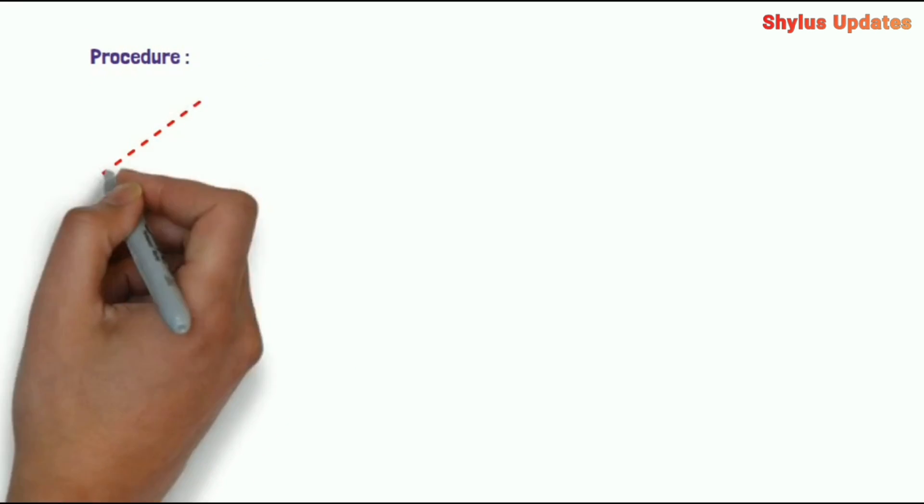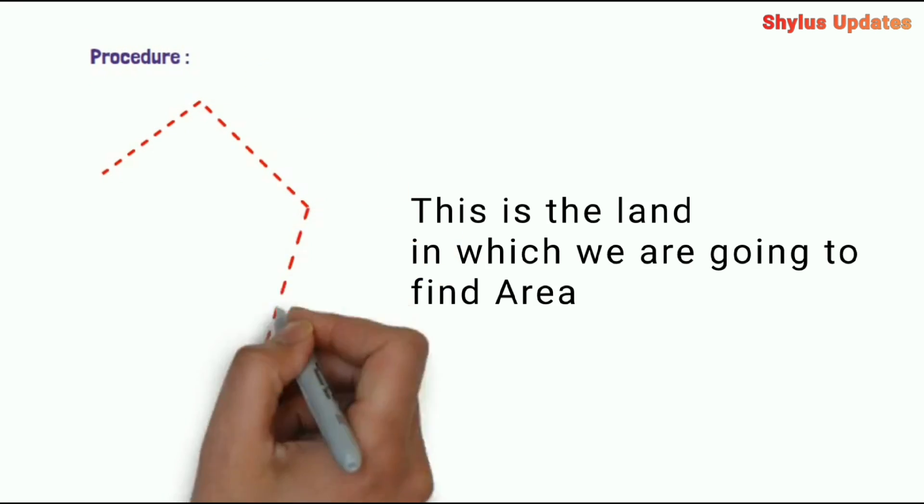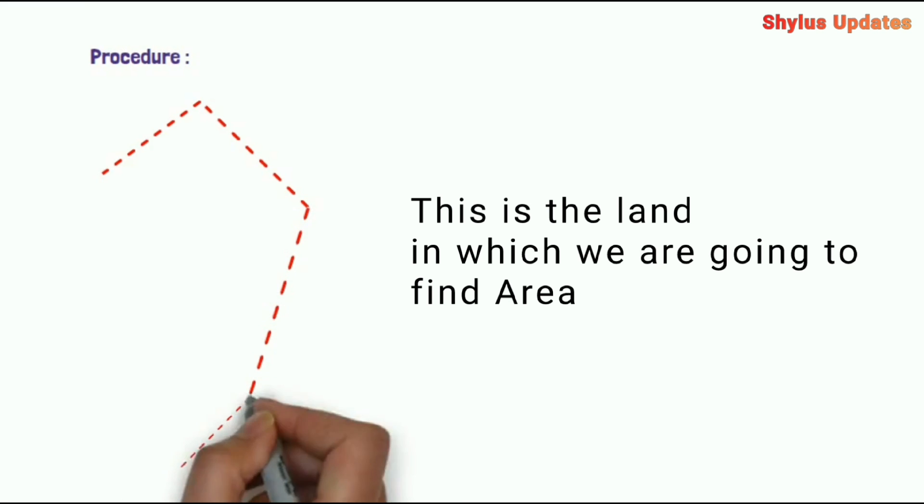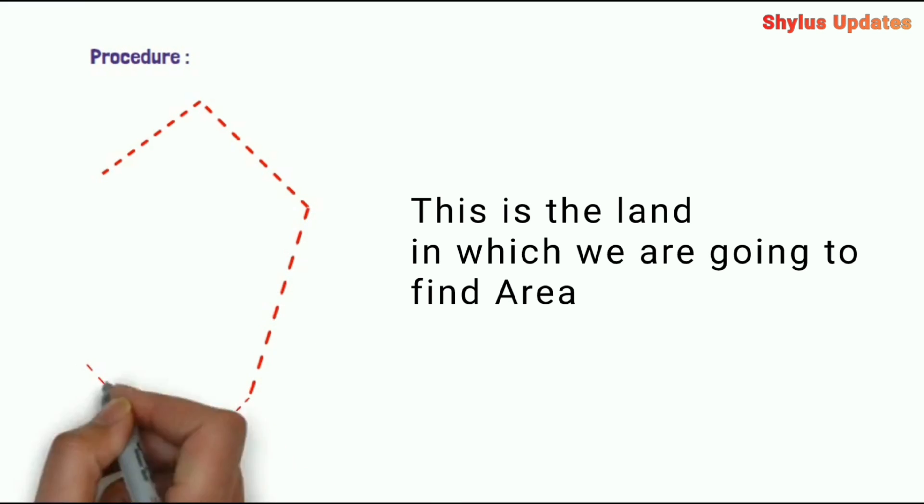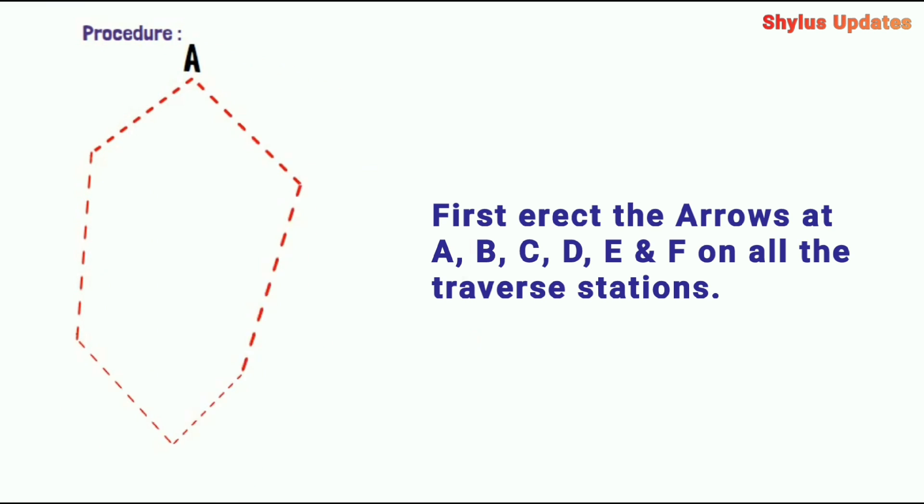Procedure: This is the land in which we are going to find area. First, erect the arrows at A, B, C, D, E, and F on all the traverse stations.